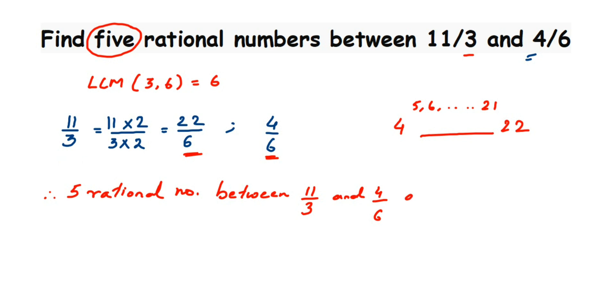The 5 rational numbers between 11 by 3 and 4 by 6 are, you can take anything but don't take 4 and 22. You can start with 5 by 6, you can take 6 by 6 which is 1, I'll take 10 by 6, then you can take 15 by 6, I'm just taking randomly 5 numbers, and then you can take 20 by 6. These are the 5 rational numbers between these two. I hope this question is clear. In case you have further question or doubt you can drop a comment. Thank you so much for watching.